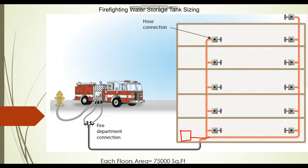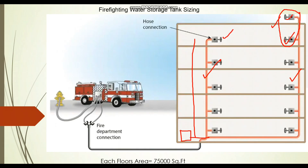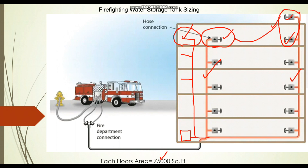Now consider a third condition for the same project: we have the last standpipe, a second standpipe, and one additional standpipe — three total. The remote standpipe is the same: 500 GPM (250 plus 250). For the second standpipe, with our floor area of 75,000 square feet, we consider one landing valve: 250 GPM, giving 750 GPM cumulative. For the third standpipe we also consider only one residual landing valve at 250 GPM. So total is 500 plus 250 plus 250 = 1000 GPM.